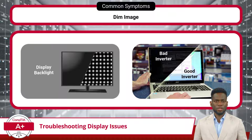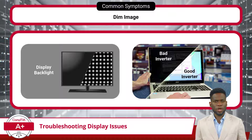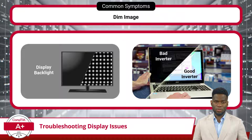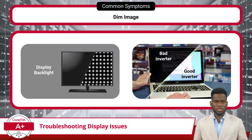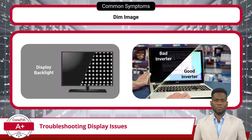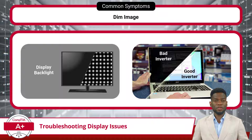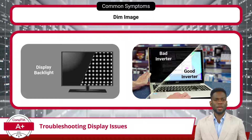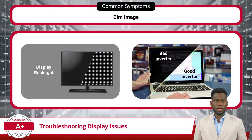Furthermore, a malfunctioning inverter within the display may also contribute to dimness. The inverter is a component responsible for supplying power to the backlight in older LCD displays. If the inverter fails, it can result in an inadequate power supply to the backlight, leading to dimness or flickering. One method to determine if the inverter or backlight is malfunctioning is to shine a light directly onto the screen and observe for any faint images. If you see an image, it suggests the backlight may not be receiving power — the image is being displayed but not adequately illuminated.